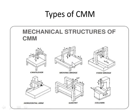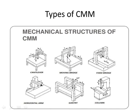The second type is called moving bridge. In cantilever, one end is fixed and another is free. In the bridge type, both ends are fixed. This is the CMM unit and this touching point is called the probe. The bridge moves forward and back in the horizontal direction, and the probe moves in the vertical direction and across the flat surface. That's why we call this the moving bridge type.